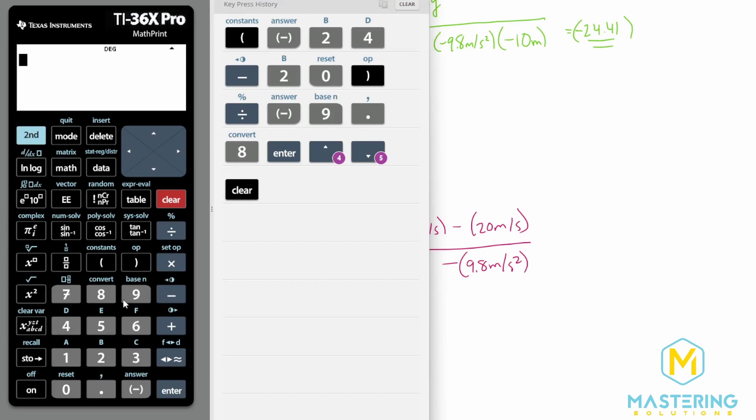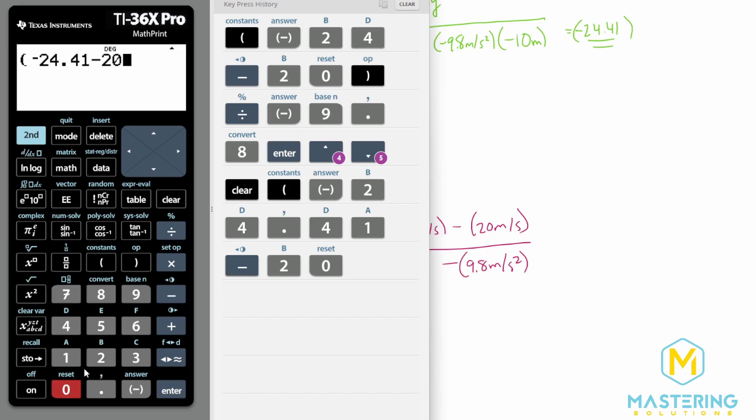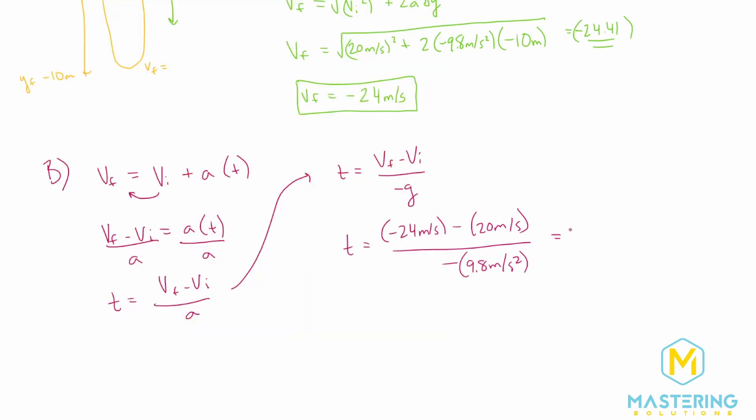So when we go to our calculator, what we have is a negative 24. I'm going to use the expanded one, so 0.41, just so I don't get a rounding error. And then we'll subtract from it negative 20 for the initial velocity and then divide all that by a negative 9.8 for g. So the time that we give is 4.53 seconds.